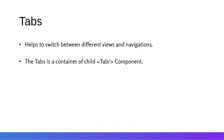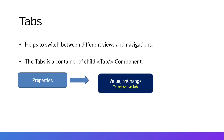The Tabs component is the container of the child Tab components. It holds the value of the active child component and updates the currently active tab when any other tab is clicked. The two important properties of Tabs are value and onChange. The value is the currently active and highlighted child tab, and onChange is called whenever a different tab is selected to update the active tab value.